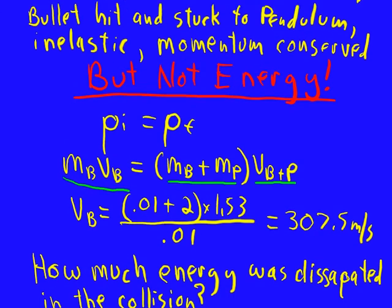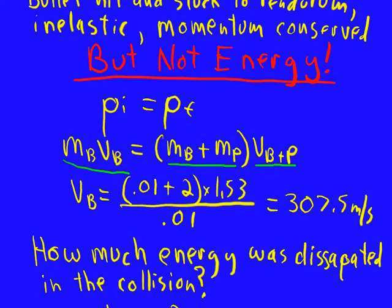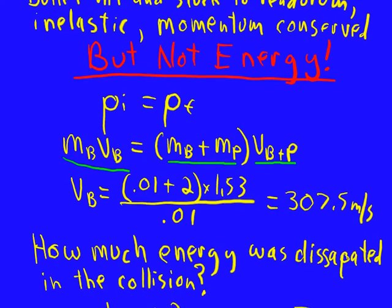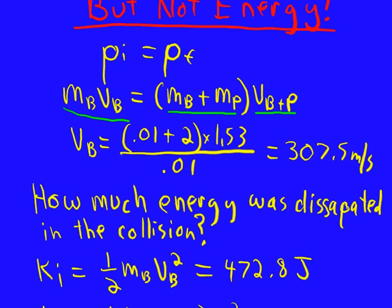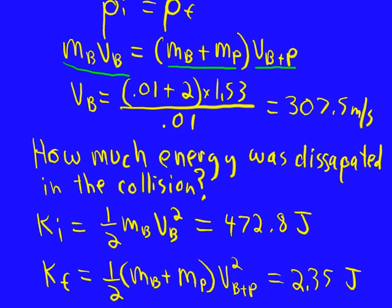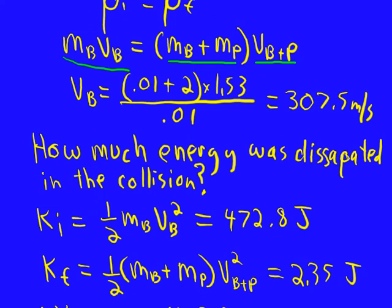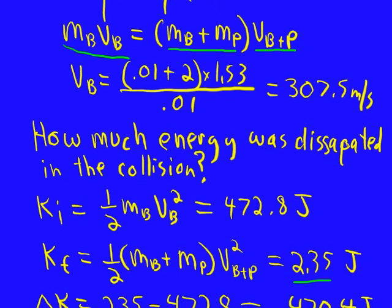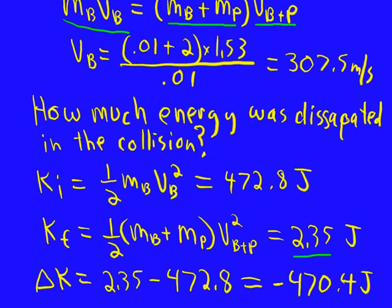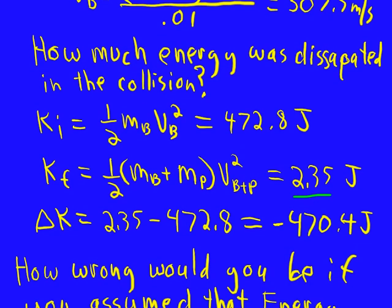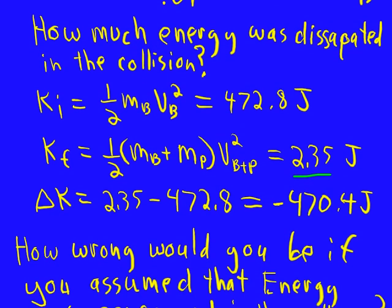Typical sort of question they might ask is how much energy was dissipated in the collision. The initial kinetic energy was all in the bullet, one-half mv squared. The final kinetic energy was all in the bullet and pendulum. This is immediately after the collision, before it swung up. The change in kinetic energy, almost all of it, we lost 470.4 joules. That means 470.4 were dissipated.